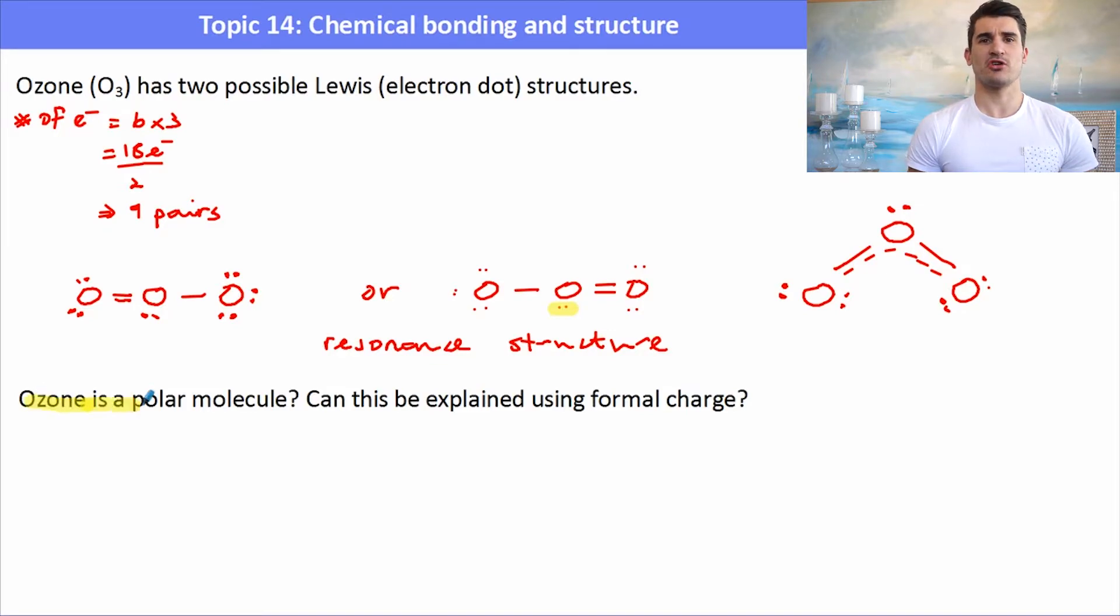Now is ozone a polar molecule? Can we explain this using the concept of formal charge which we touched on in the last video? Here we have our diagram for ozone. In this case I'm going to draw one with the double bond and one with the single bond, and then what we need to do is go through and calculate the formal charge on each of the oxygen atoms.